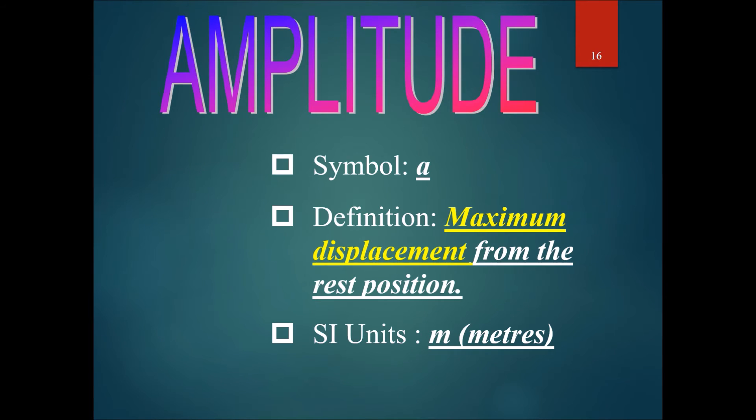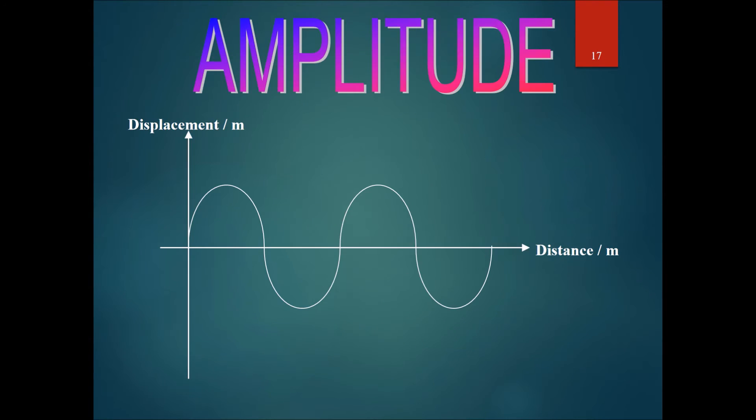Next, we need to talk about amplitude. The definition of amplitude is the maximum displacement from the rest position. Symbol for it is a, and the unit for it is in meters. It's a measurement of distance. Looking at the same graph again, the displacement distance graph, these things are their amplitudes.